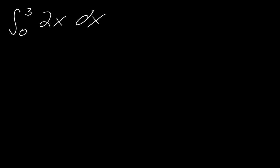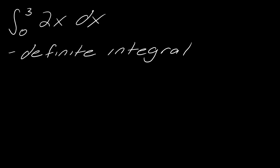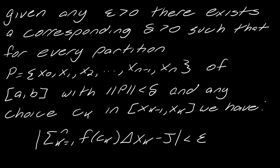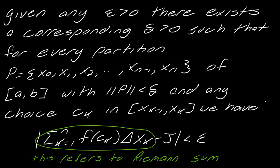Now let's pivot to the next integral — a definite integral. The formal definition is pretty heavy: f(x) is a function defined on a closed interval, and the definite integral of f over that closed interval is the limit of a Riemann sum. This is an epsilon-delta definition that talks about partitions. The key takeaway is that the definition of a definite integral refers back to a Riemann sum, so you should have already seen Riemann sums.